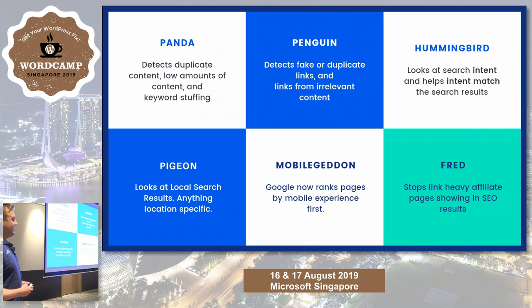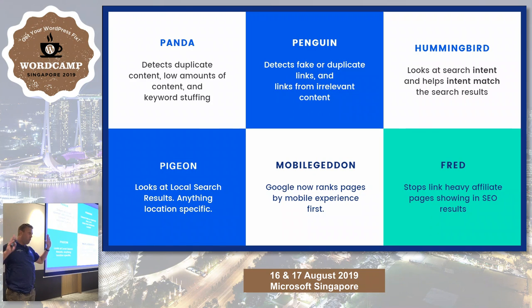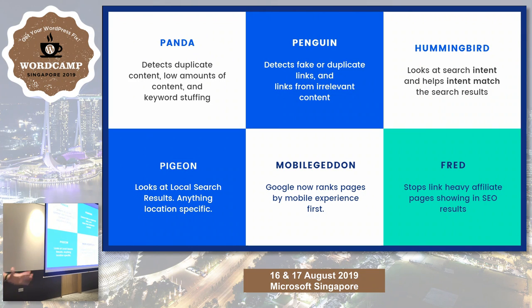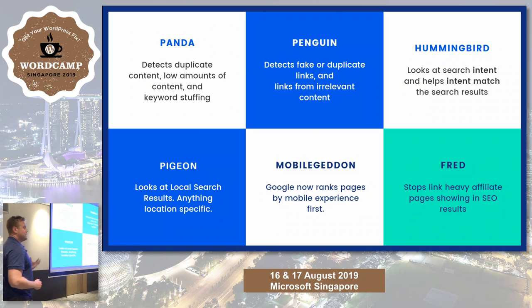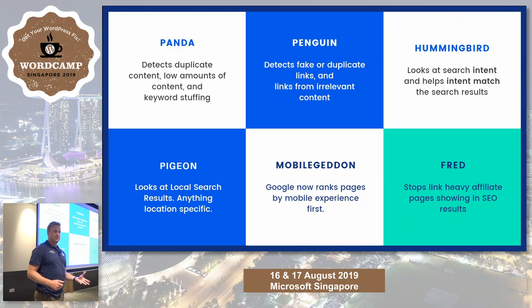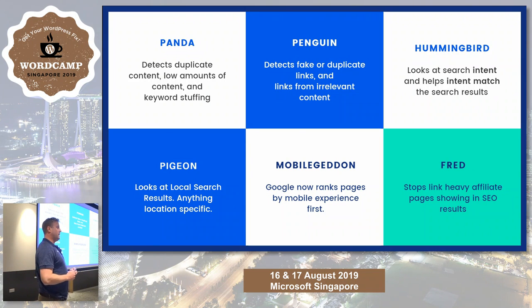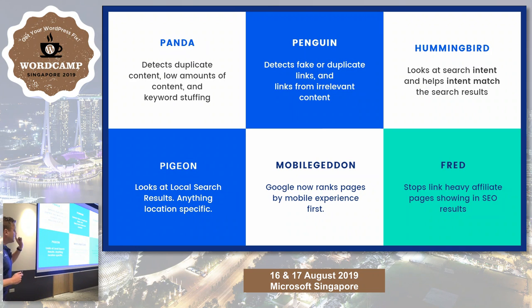Every algorithm update recently is called Fred. We got sick of giving them names. So if an agency says 'it was the Fred update,' it could be any update that happened this year. Algorithms are now updating around 18 to 20 times a day — they're machine learning algorithms.